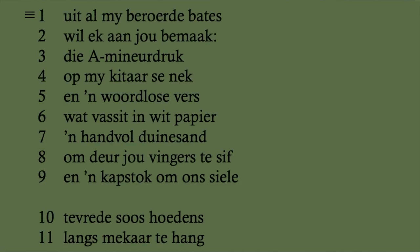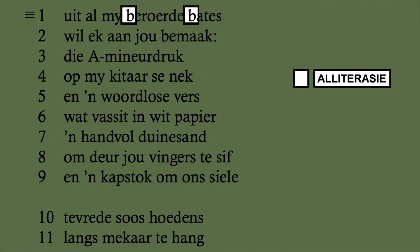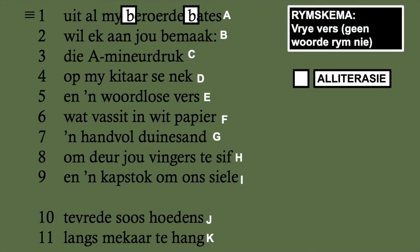Looking at the poem again: the alliterasie I found was 'beroerde bate' (the B-B sound). For the rhyme scheme, it goes A B C D E F G H I J K — nothing rhymes in this poem at all, which means it is a vrye vers (free verse). I hope these notes help; I'll be making more videos explaining other poems, and you can use this for revision.